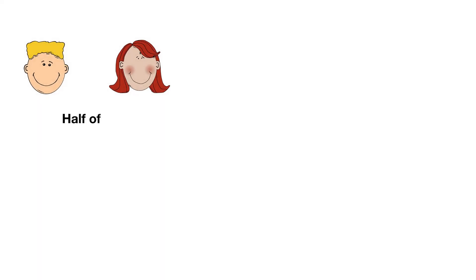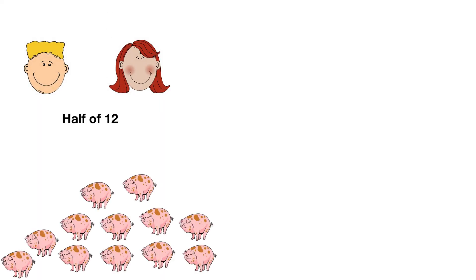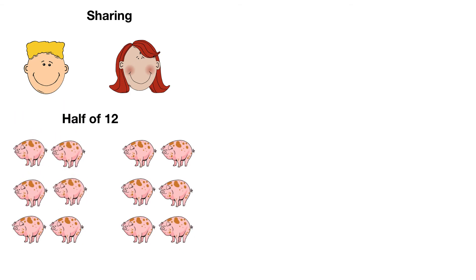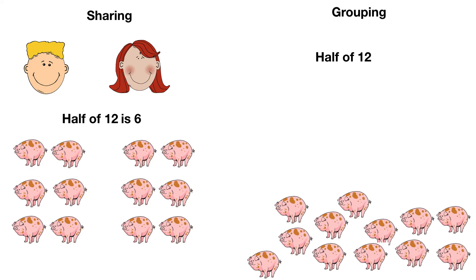And finally, half of these twelve pigs want to go roll in the muddy field. How many pigs does Tim need to let into the muddy field? We can find half of twelve by sharing between two, like this. Now Tim has six pigs, so half of twelve is six.